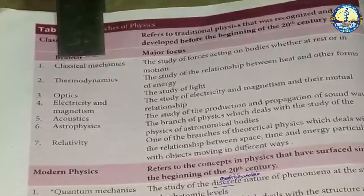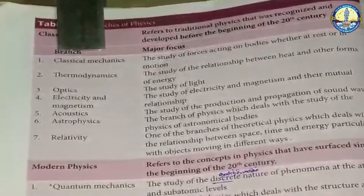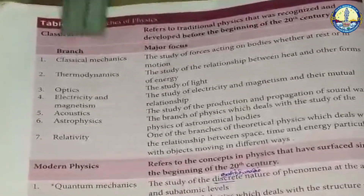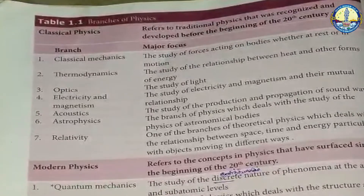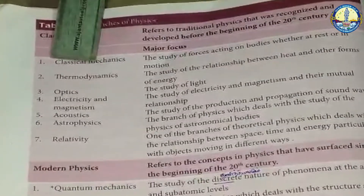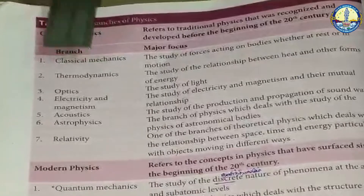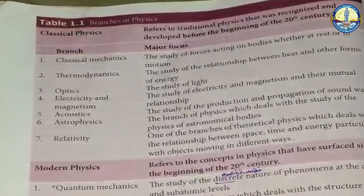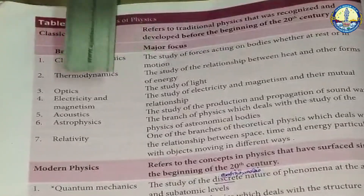Let us look at a brief introduction to the classification of physics. Classical mechanics deals with objects at rest or in motion. Thermodynamics deals with heat, other forms of energy such as light energy and wind energy, and their relationships.